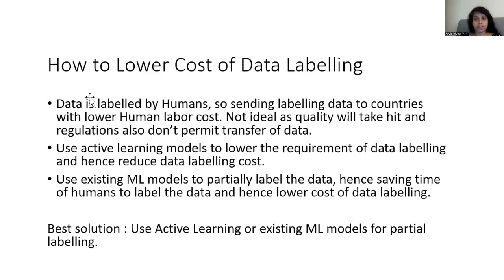Another approach is using active learning models to identify which data actually needs to go to the model to improve its performance. For example, if we previously used 100 units of data but 80 are repetitive and the model already performs well on them, there's no need to send those 80 units for labelling again. We only send the 20 novel units. Active learning models are now an industry practice, where scientists use them to identify which subset of data will give maximum ROI, and only send that data for labelling.